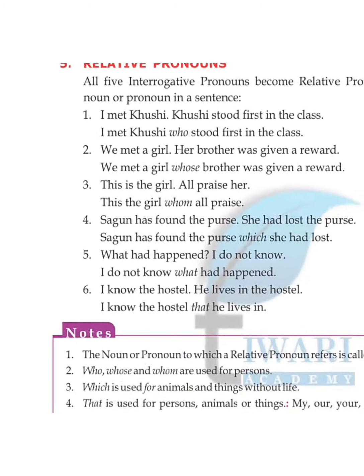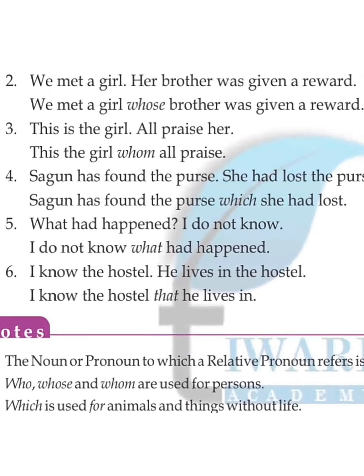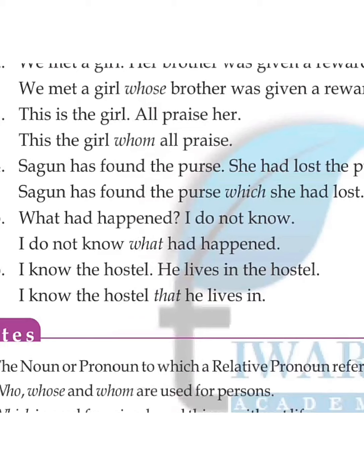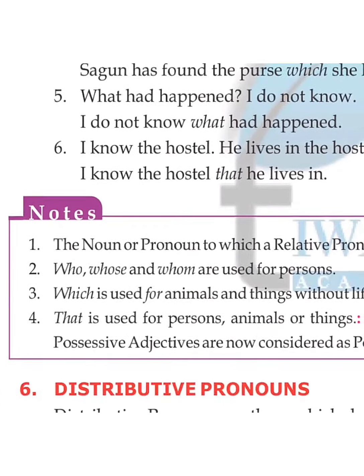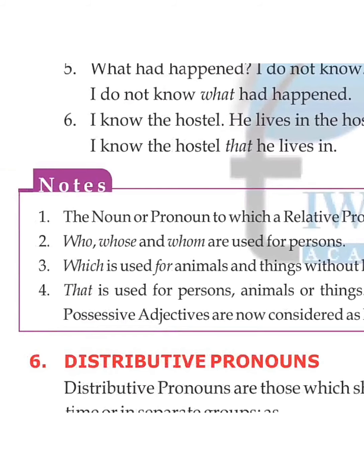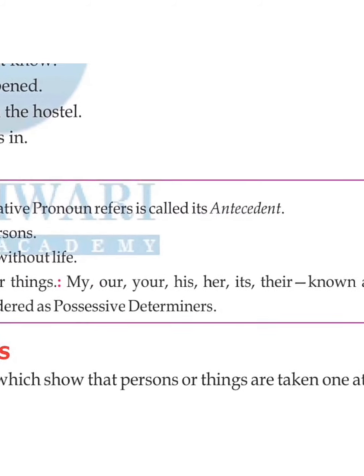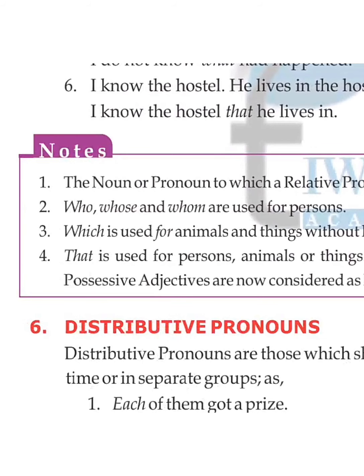'This is the girl whom all praise.' 'Shagun has found the purse which she had lost.' 'I do not know what had happened.' 'I know the hostel that he lives in.' The noun or pronoun to which a relative pronoun refers is called its antecedent. Who, whose, and whom are used for persons; which is used for animals and things without life; that is used for persons, animals, or things.